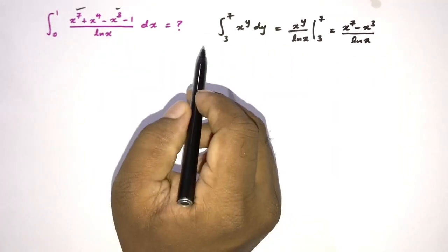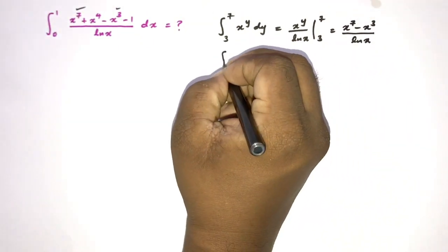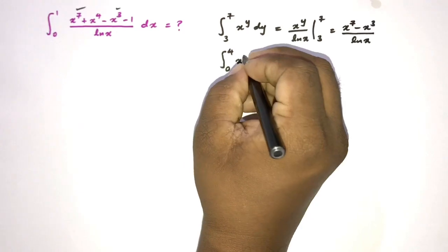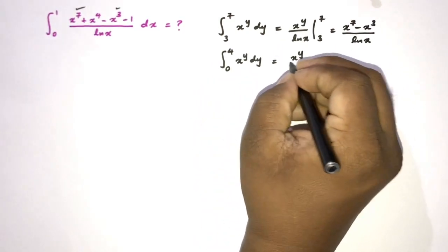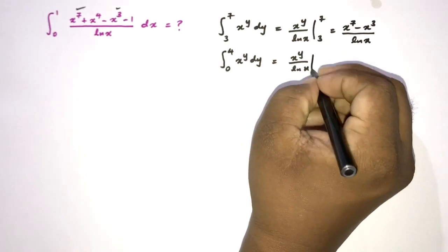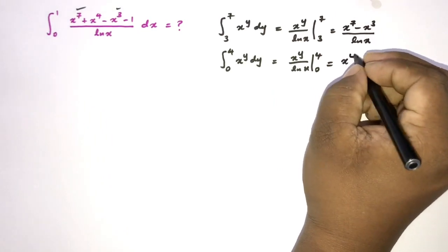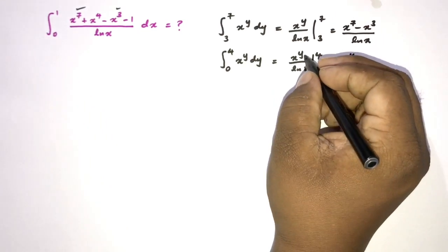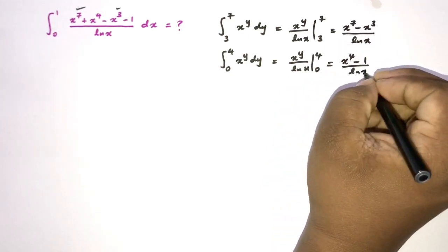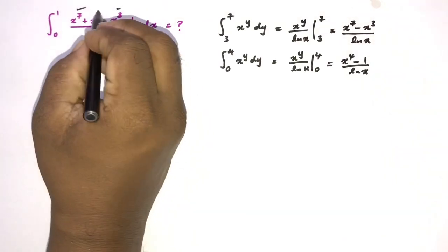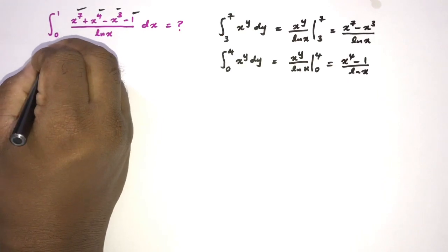Then I am going to consider another integral: the integral from 0 to 4 of x to the y, dy. This gives x to the y over natural log of x, evaluated from 0 to 4. Applying the limits: x to the 4th power minus x to the 0 power, which is 1, over natural log of x — so we have x to the 4th minus 1 over natural log of x.